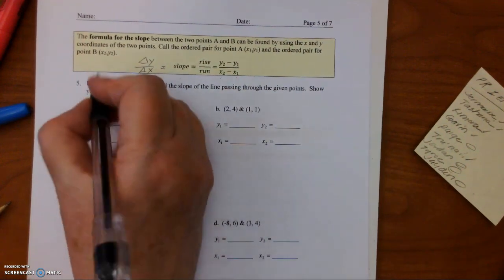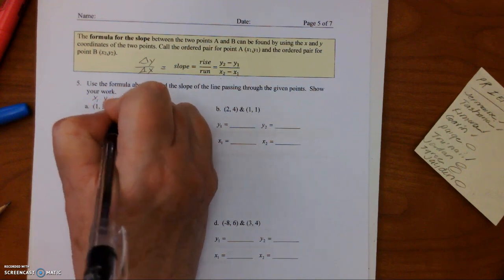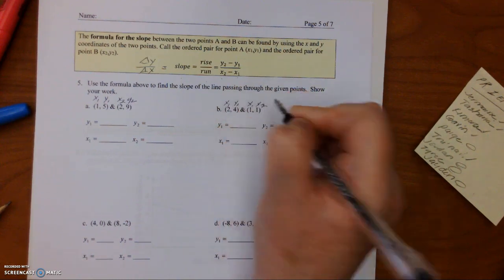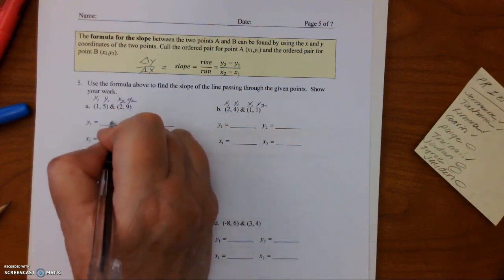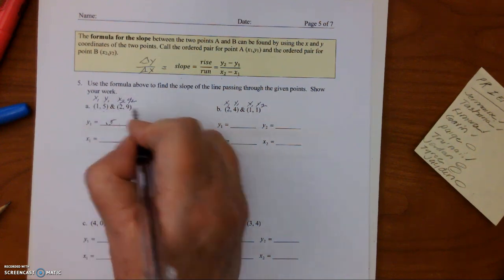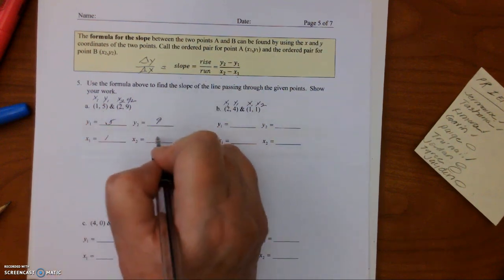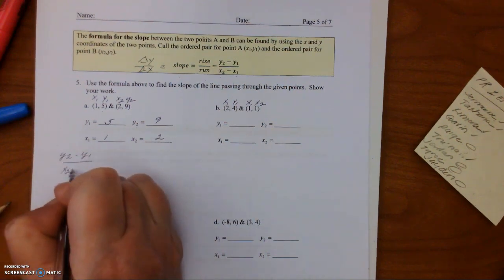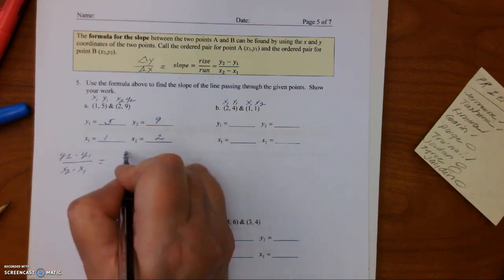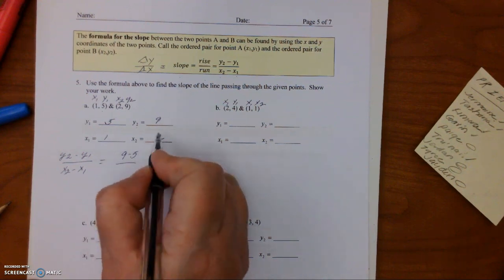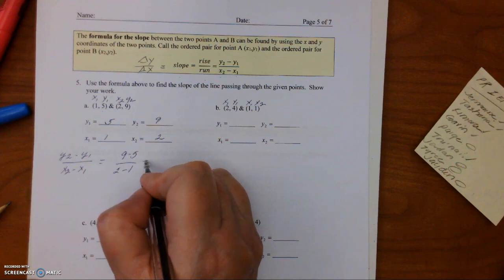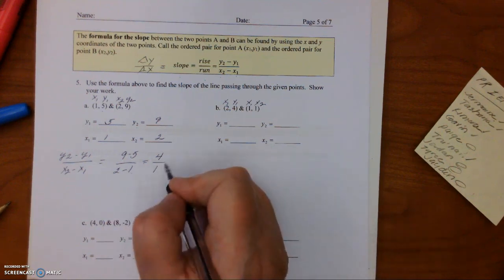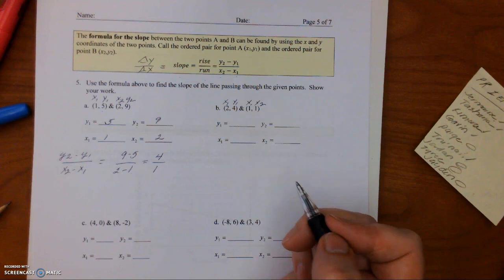So what I like to do is label x1, y1, x2, y2 ahead of time so it makes the math much easier. So y1 is 5, y2 is 9, x1 is 1, x2 is 2. I always write the formula because it keeps me nice and clean. So y2 is 9, y1 is 5, x2 is 2, x1 is 1. So 9 minus 5 is 4, and 2 minus 1 is 1. So the rise over run is 4 over 1.